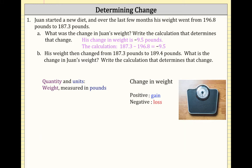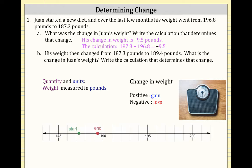Now let's look at part B. His weight then changed from 187.3 pounds to 189.4 pounds. What is the change in Juan's weight? Write the calculation that determines this change. We'll represent this on a number line, looking at the starting point of 187.3 pounds and the ending point of 189.4 pounds.